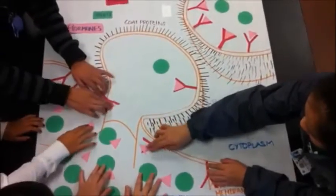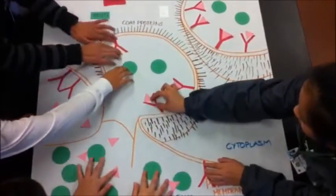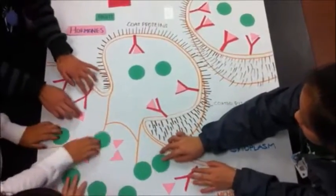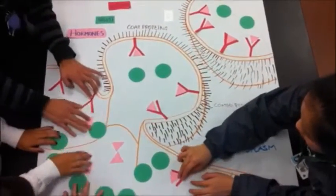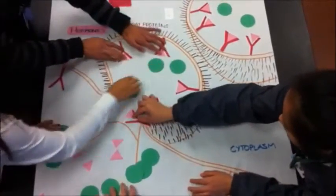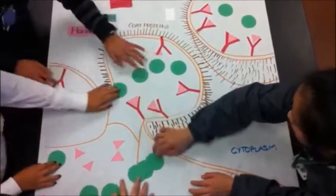So first the cell exposes receptors to the outside with specialized proteins coding inside with receptors. These are coded to bind with the ligand molecules. Only this kind, these are called the ligands. In this case they're hormones.